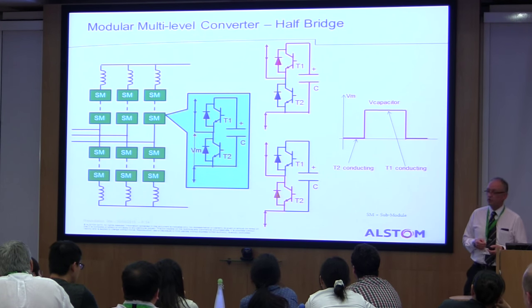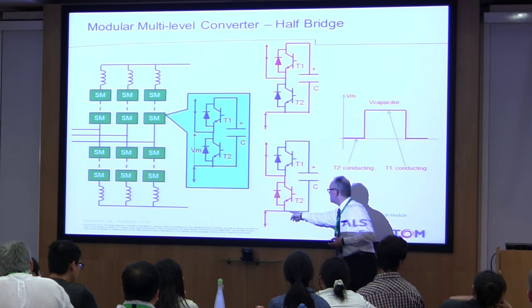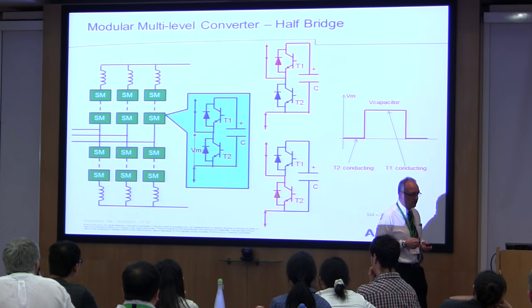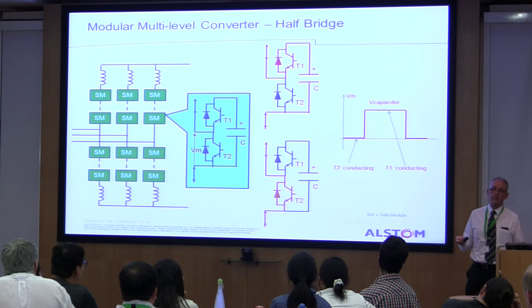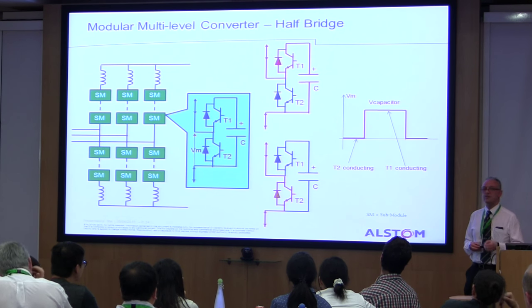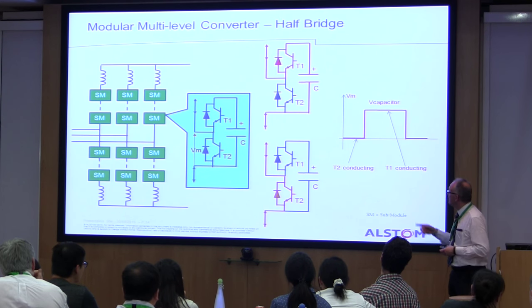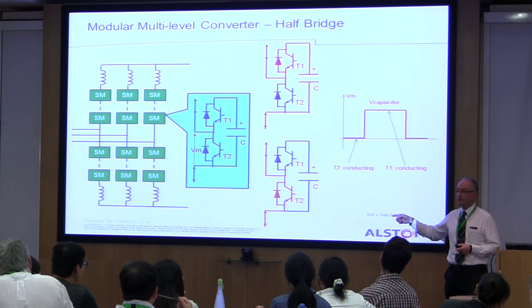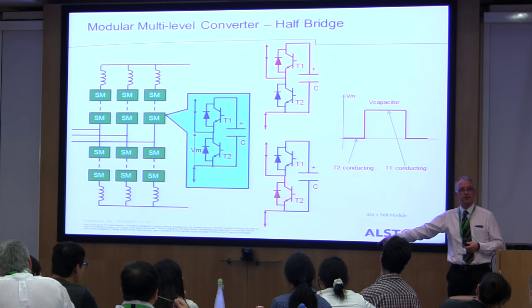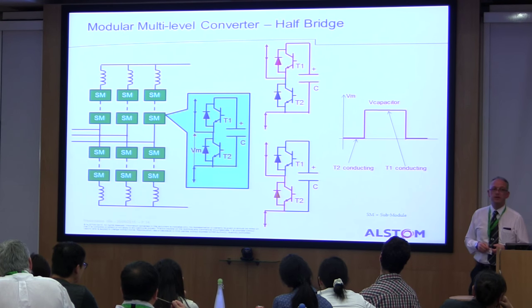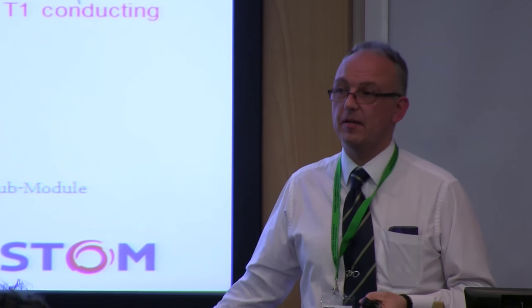The disadvantage of the half-bridge submodule compared with the full bridge is the diode — because if we get a fault on the DC side, I can't stop the current. With a thyristor valve I could remove firing pulses at the next current zero and the thyristor would turn off, electronically interrupting fault current. But with a diode in each submodule circuit, if there's a DC-side fault, the primary protection must be the AC breaker. From a European perspective, where most schemes are point-to-point cable, if you've got a cable fault it'll take days, weeks, or even months to repair for a submarine cable — so tripping the AC breaker may not be that bad a thing.